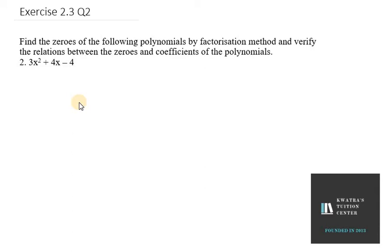In this case it is given that 3x² + 4x - 4. So first of all what we need to do is we need to put f(x) = 0. Now we need to split the middle term here.